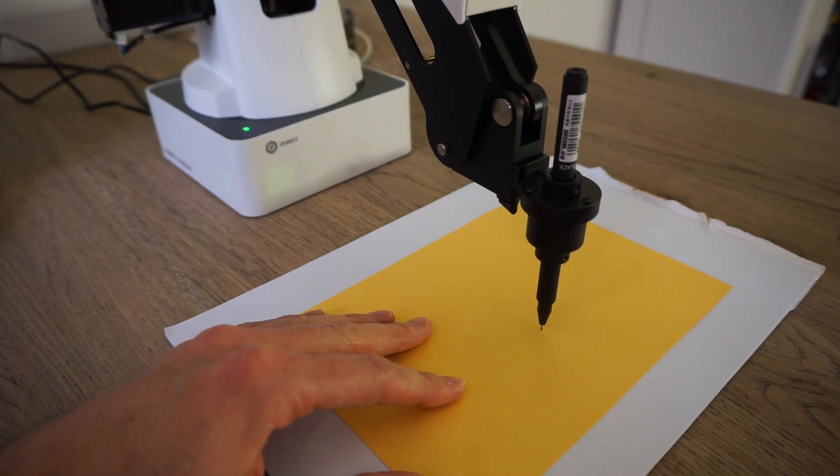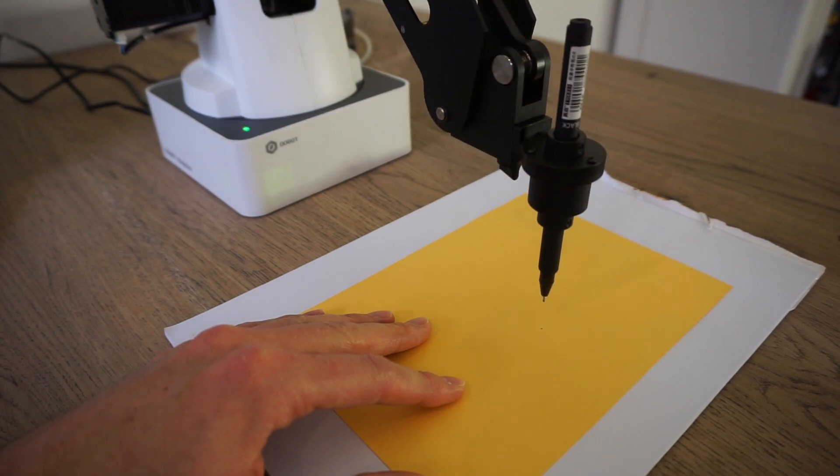Then, press the auto-Z and the pen down position is registered. Raise the pen back up, press start, and that's it.